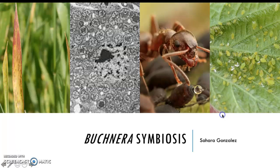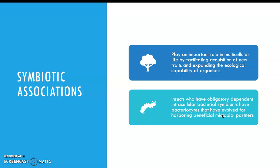Buchnera symbiosis — symbiotic associations. They play an important role in multicellular life by facilitating the acquisition of new traits and expanding the ecological capacity of an organism. In other words, this relationship is going to allow for both of them to be benefited in a way that will give them better traits.